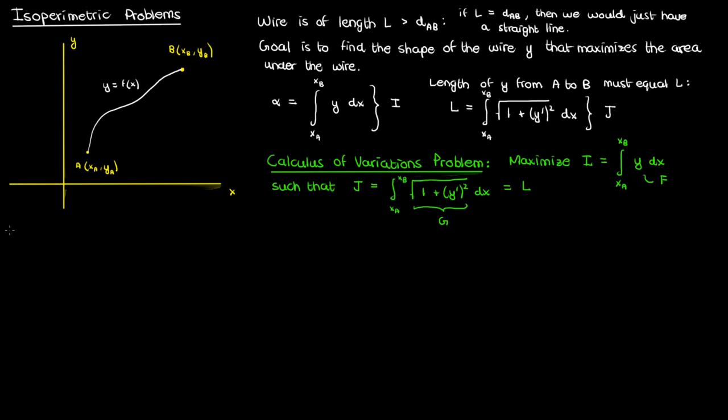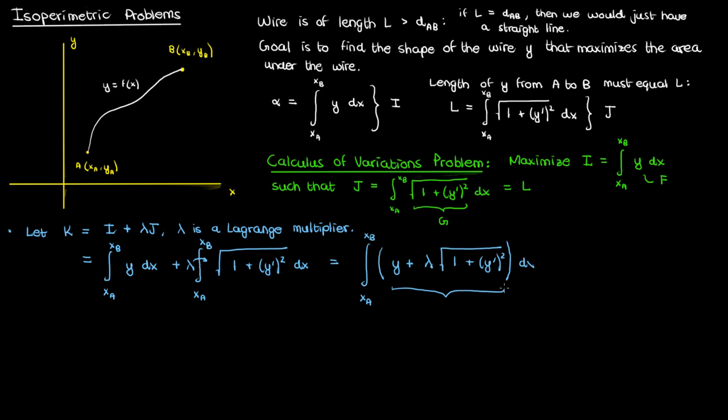How do I solve this constrained variation problem? Well I set up a composite functional k which is just i plus lambda j where lambda is a Lagrange multiplier. If I substitute the integrals this is what I get. We can take the lambda inside the second integral and combine both of these integrals since the limits are the same and they're both with respect to x.